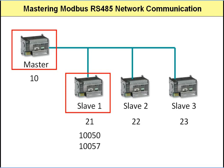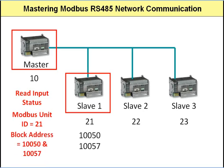What the master needs to use is a read input status command, because 10,050 and 10,057 are within the inputs area of the particular slave — slave one. So the Modbus master has to send a read input status command with the Modbus unit ID of 21, and ask for the data in memory blocks 10,050 and 10,057. But unfortunately, we have a little problem. We can't specify the memory blocks to be read this way. The read input status command is fine, the unit ID 21 is fine, but there's a problem with the block addresses.